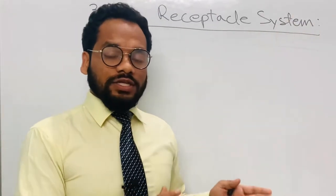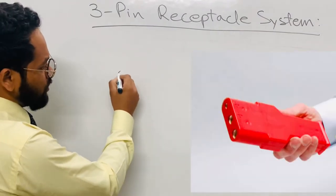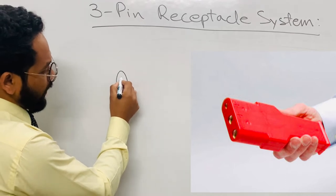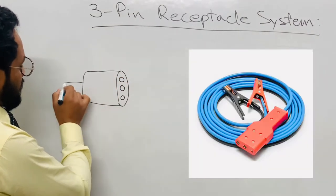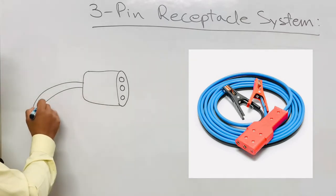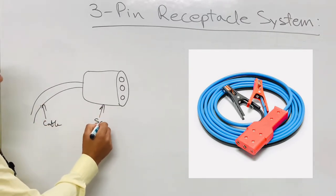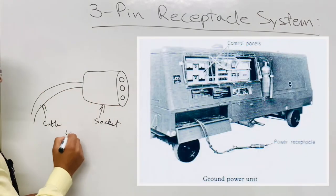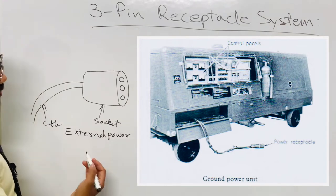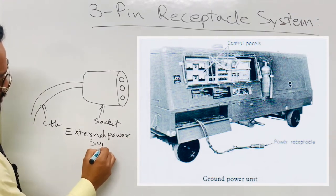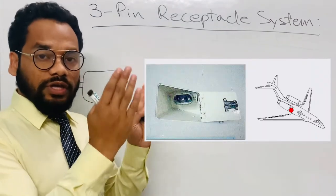In this system, from the external power there is a socket called the external power supply socket. This is the cable of the external power supply and this is the socket. This is of the external power supply, which is also called the ground power supply or ground power unit.